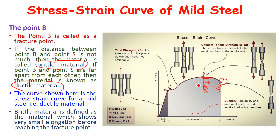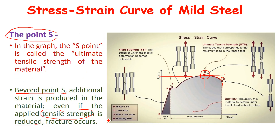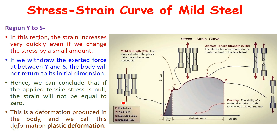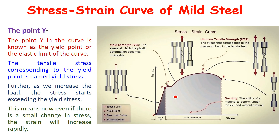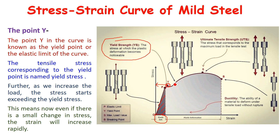These are the important points to understand from the stress-strain curve, and you must know the meaning of each point for interviews or oral examinations. There are five points: O, P, Y, S, and B. The O to P curve is a straight line, which represents that the material obeys Hooke's law — this region is called the elastic region. Point Y is the yield point; the corresponding stress is called yield stress or yield strength. In other words, yield strength is the stress at which plastic deformation becomes noticeable — the deformation of the material just starts.